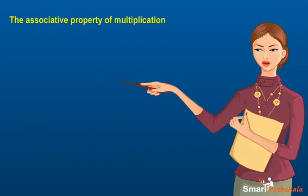The associative property of multiplication says that if we make different groups with the same given whole numbers, the product is the same in all the groups. This property is also known as associativity of multiplication of whole numbers.